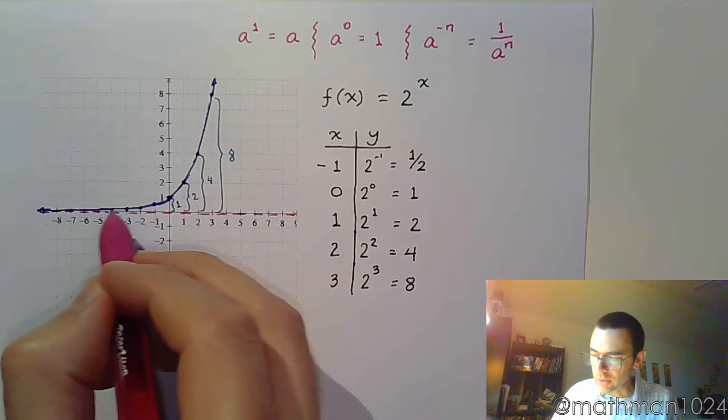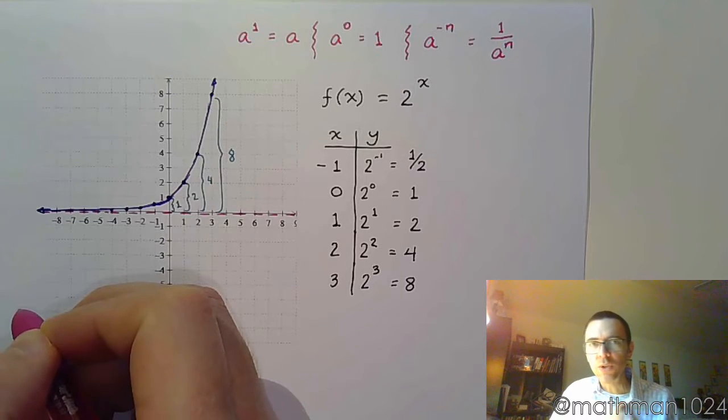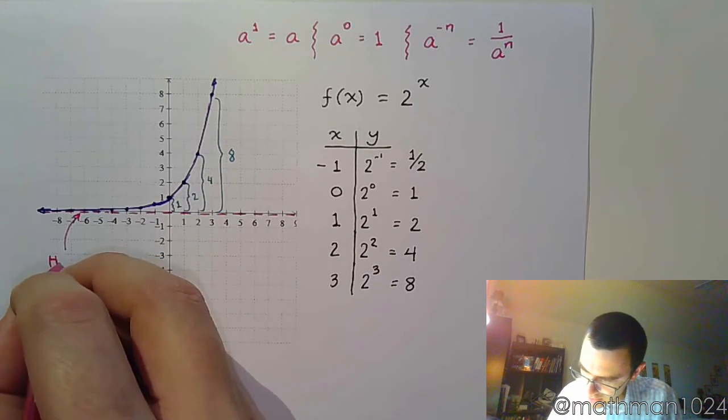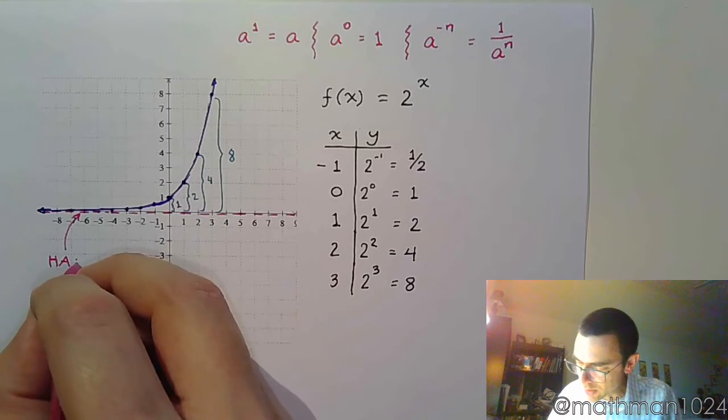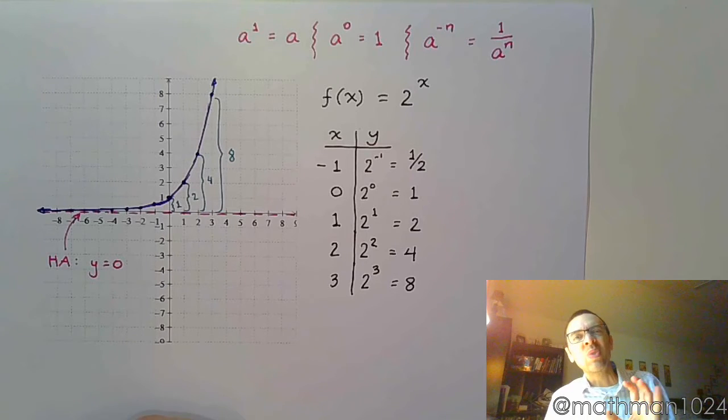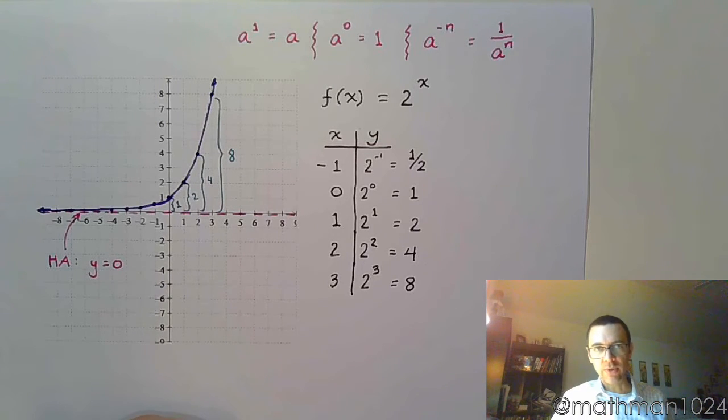Because as I go out here to the left, I'm going to get closer to 0, but I don't ever equal 0. So you have, by default, a horizontal asymptote of y = 0. But unlike rational functions, you don't have a vertical asymptote.